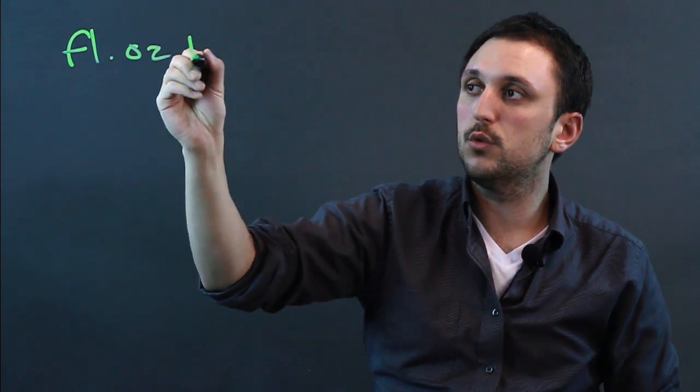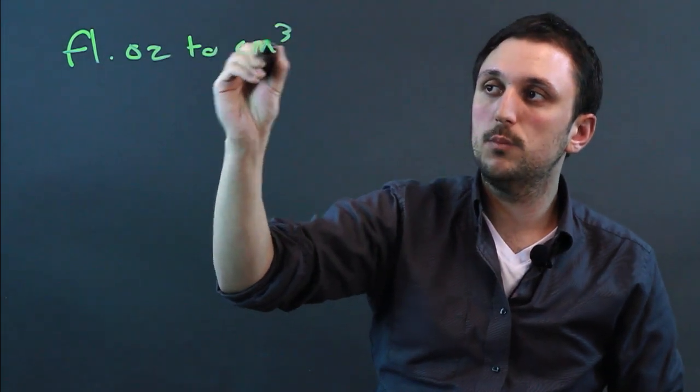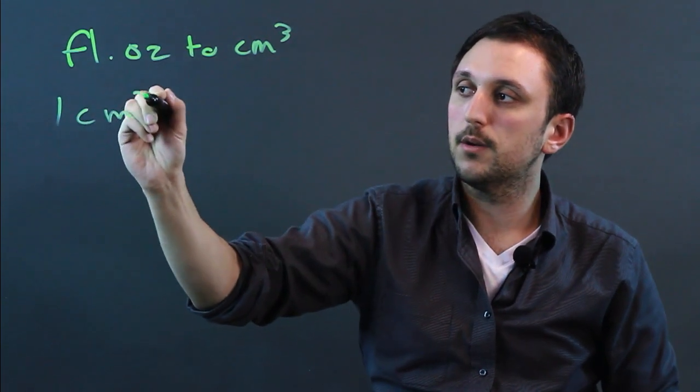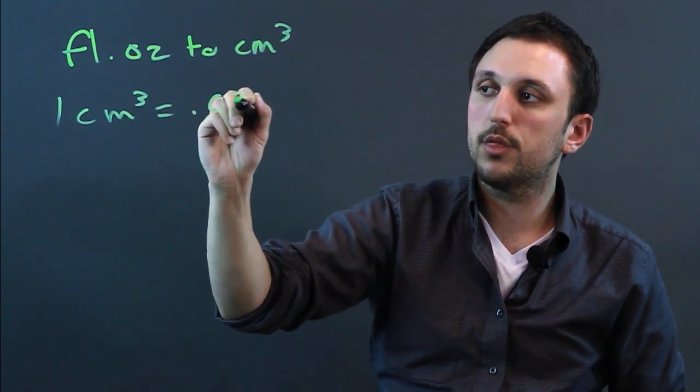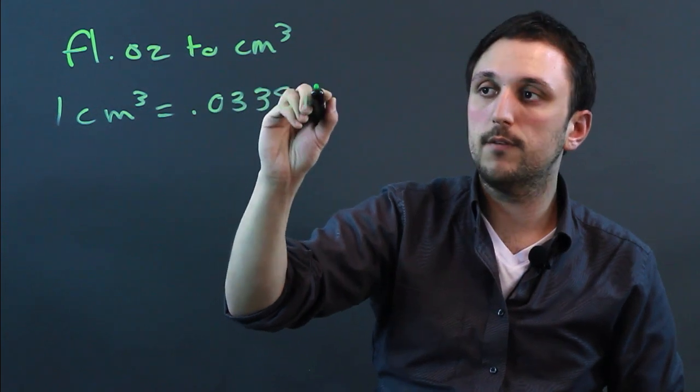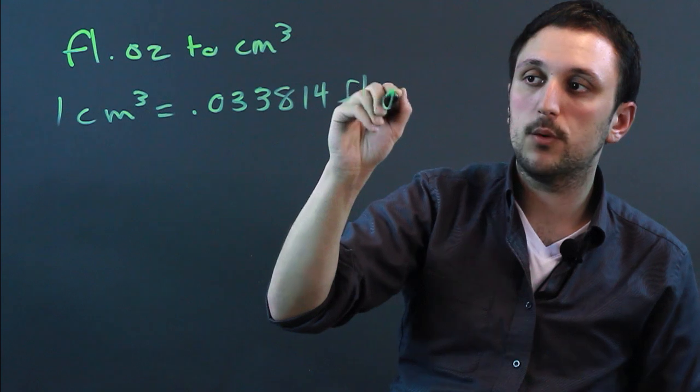So fluid ounces to centimeters cubed, one cubic centimeter equals 0.033814 fluid ounces.